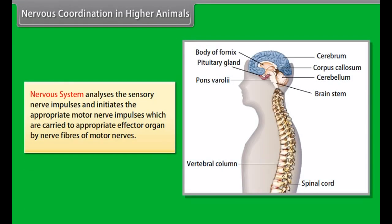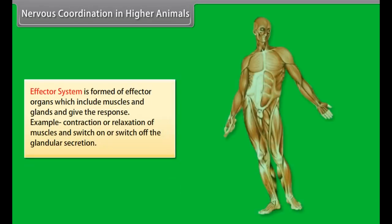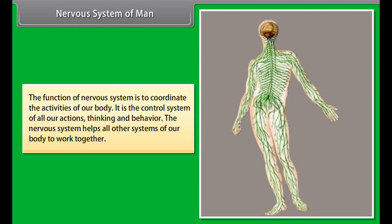The nervous system analyzes the sensory nerve impulses and initiates appropriate motor nerve impulses, which are carried to the appropriate effector organ by nerve fibers of motor nerves. The effector system is formed of effector organs, which include muscles and glands, and give the response — for example, contraction or relaxation of muscles, and switching on or off of glandular secretion.